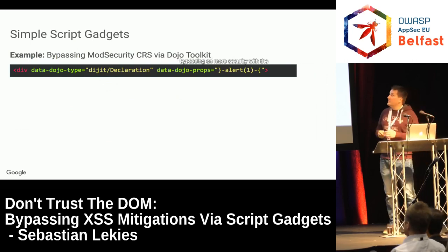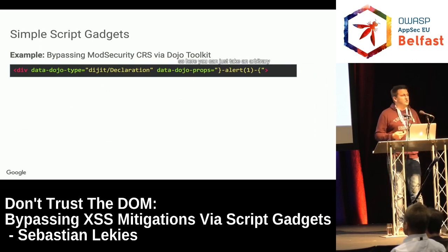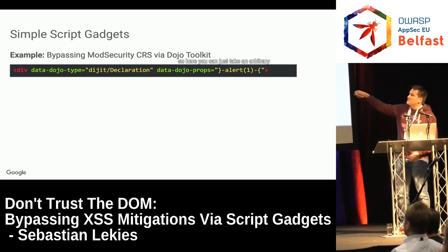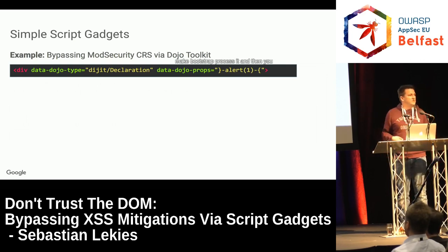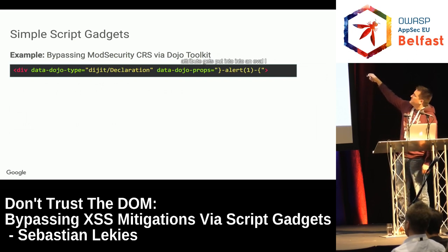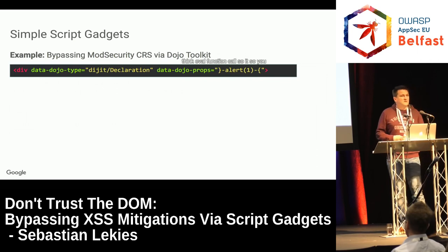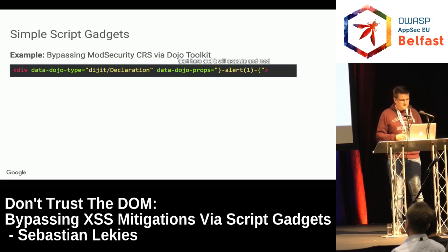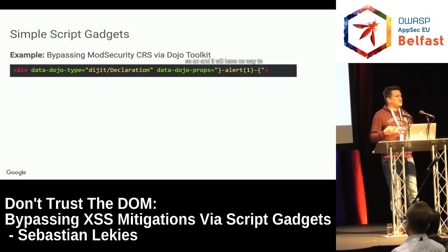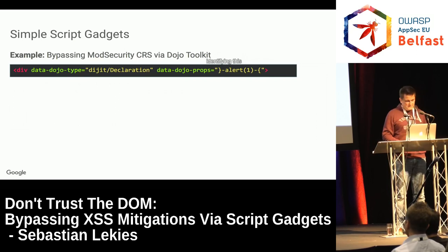Here's another example bypassing mod_security with the core rule set installed in the Dojo toolkit. You take an arbitrary div tag, put a data attribute with some type to make Dojo process it, and this attribute gets put into an eval or function call. You can just break out of the current context in that eval and put an alert. It will execute, and mod_security will not be able to find it because it looks for script tags and event handlers and has no way of identifying this.